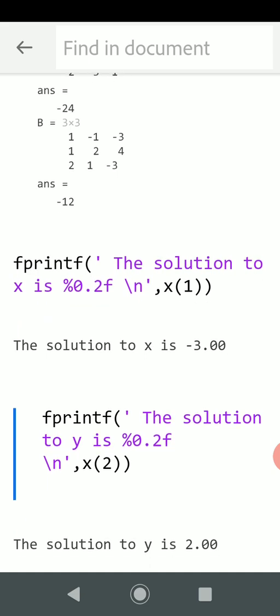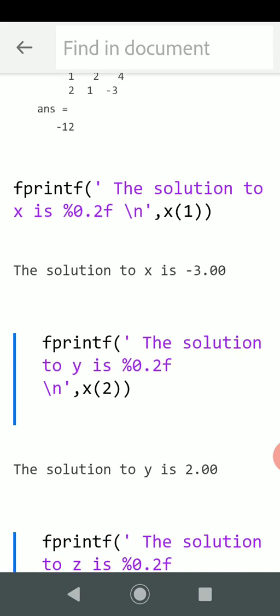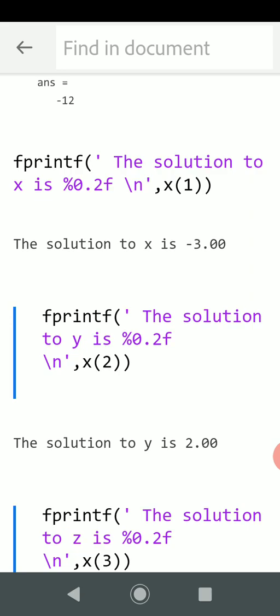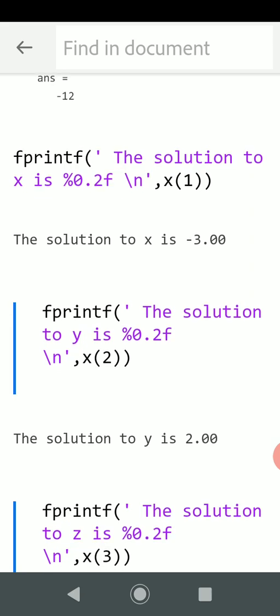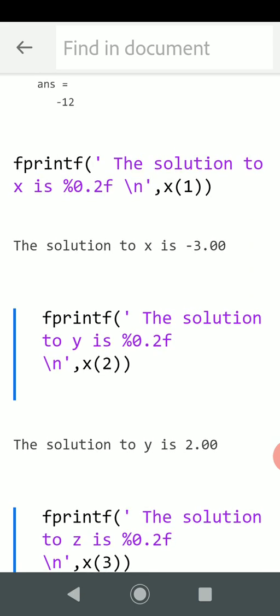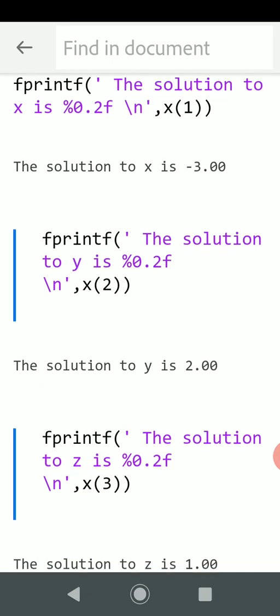We did an fprintf there, and so the solution to x is -3. We popped in x(1). For x(2), fprintf 'the solution to y is %0.2f', so we're printing to two decimal places of x(2), so that's 2.